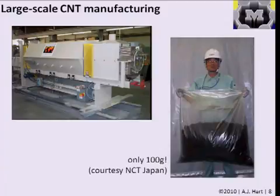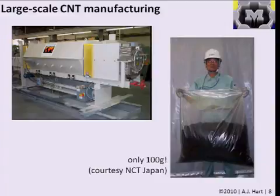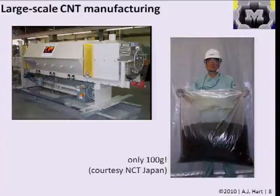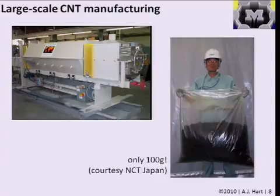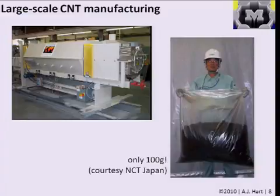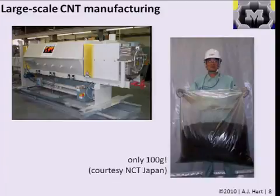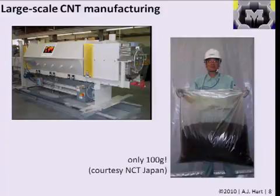Lab-scale processes to grow nanotubes can be small, but industrial-scale processes can be very large. Over 300 tons of carbon nanotubes are made around the world each year, largely for use in polymer composites and batteries — a lot of our cell phone and laptop batteries have nanotubes in the electrodes because they improve charge-discharge cycling. A large rotary tube furnace process grows powders rather than films on wafers, producing a large clump of carbon nanotubes that is generally entangled and has fairly low density. Nanocarbon Technologies in Japan holds 100 grams of nanotubes in a large bag — that bag was purified and treated after growth.